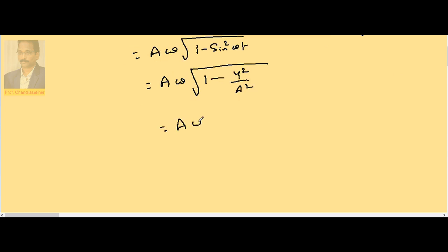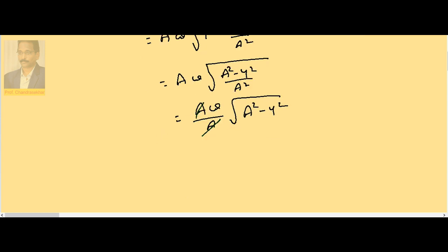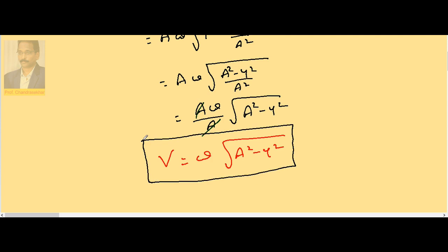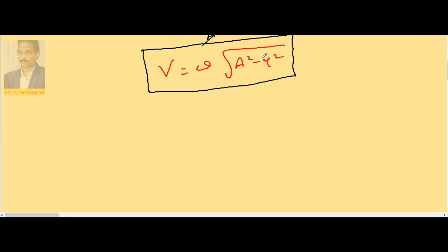Taking a² as common, this becomes √((a² - y²)/a²), and taking a² outside gives a·√(a² - y²). Cancelling a, the remaining velocity is given by ω√(a² - y²). So if you know displacement y, amplitude a, and angular velocity ω, the equation becomes v = ω√(a² - y²). If you know angular velocity and time, use v = aω cos(ωt).